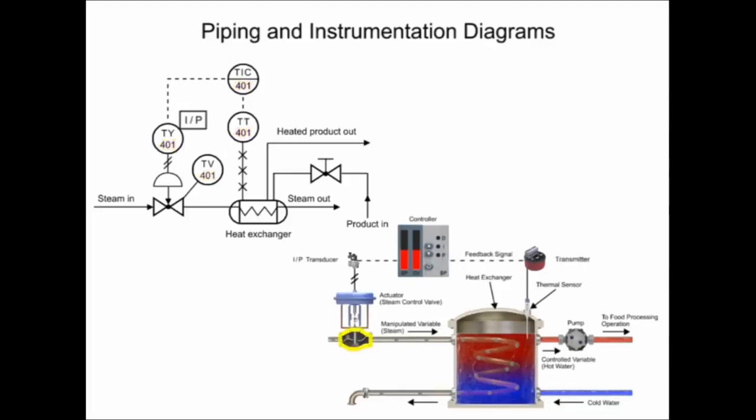The valve that allows steam to flow through the pipe is the symbol with two triangles. In the top portion of the symbols is the functional identifier, and the first letter denotes the measured variable. The first letter of each functional identifier is the letter T, which defines the process of temperature control.